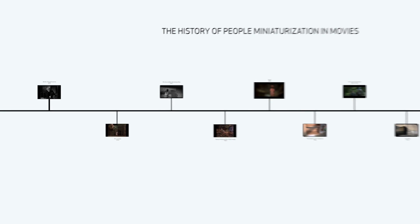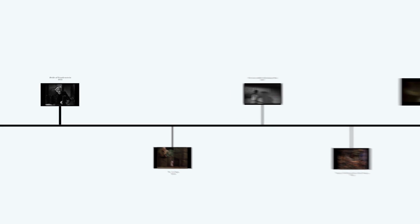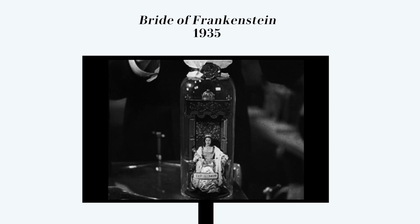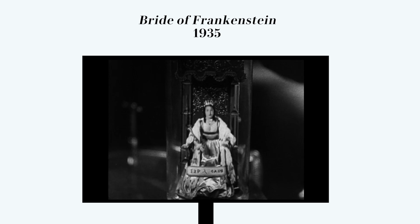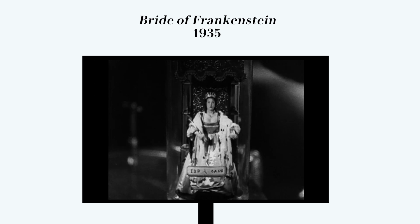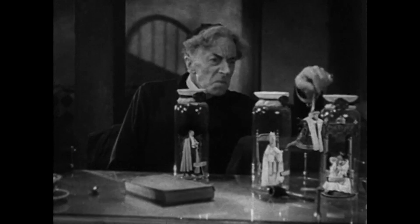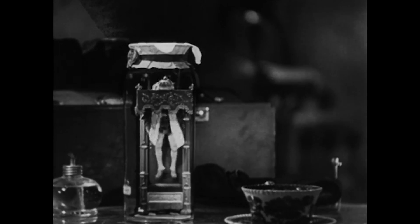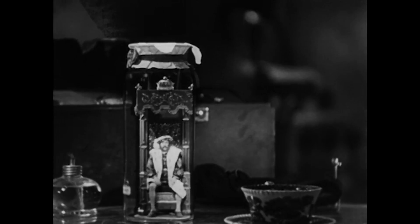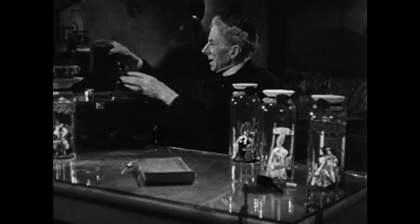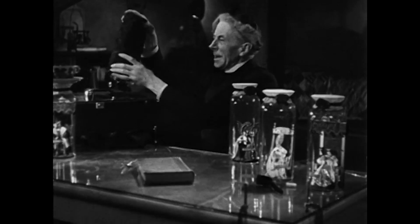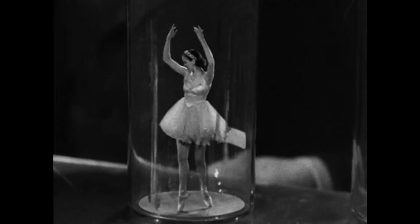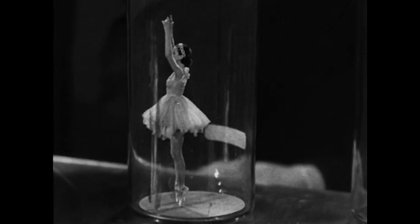One of the first primary uses of visual effects to shrink people was in the movie The Bride of Frankenstein in 1935. In order to blend the big people and the small people together, two pieces of footage had to be shot. First, there was a background plate featuring Dr. Pretorius in his lab, and then there were additional shots made of the people that would be shrunk down and placed into the jars.